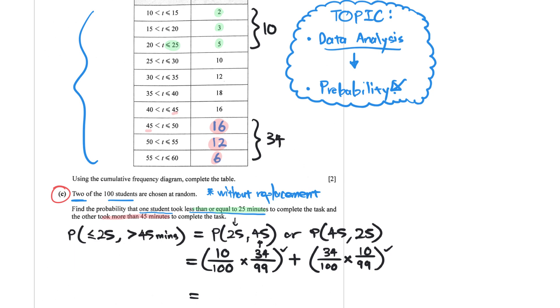So keying all that into the calculator, we will get a final value of 34 over 495. And we're done.